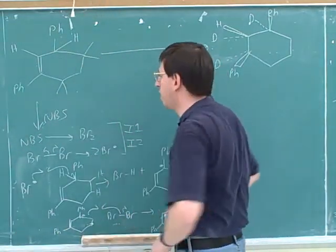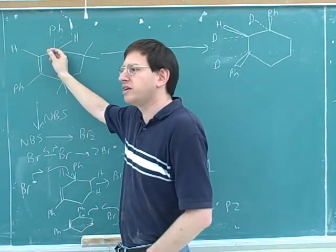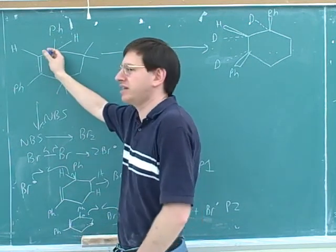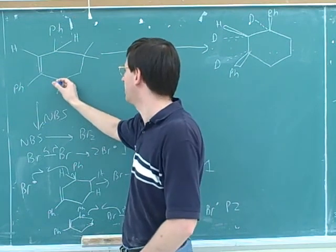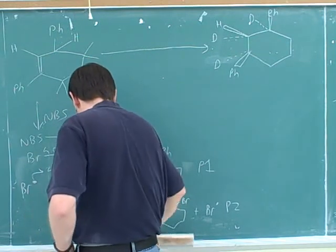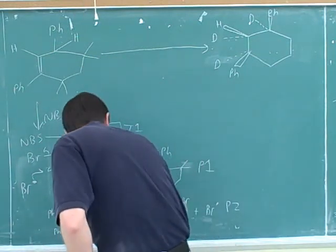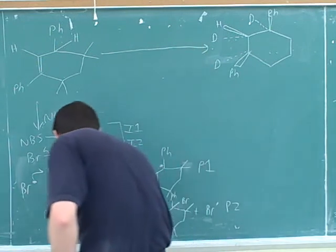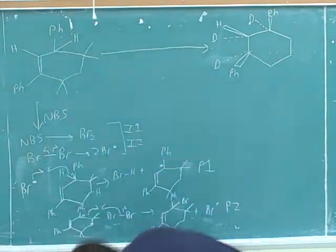This is, again, the reason why we wanted to do the radical halogenation while this carbon was still allylic. If we waited until this wasn't allylic, then we couldn't be sure that we would halogenate here. If we wait until the double bond is gone, we could halogenate here or here or here. Well, not here because there's no hydrogen. But we could halogenate any place with a hydrogen. The key point is we want to do this while this is still allylic, so we'll be selected for that.